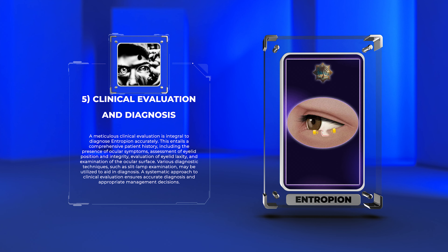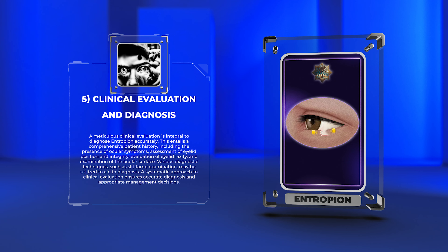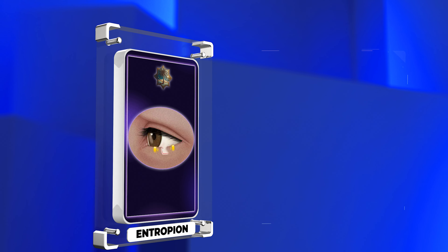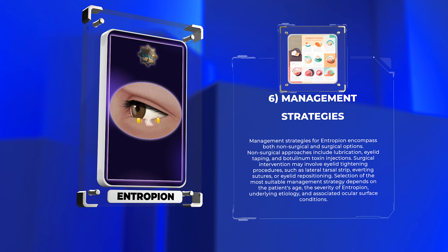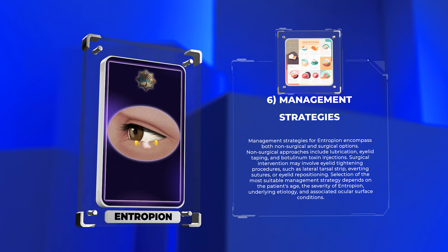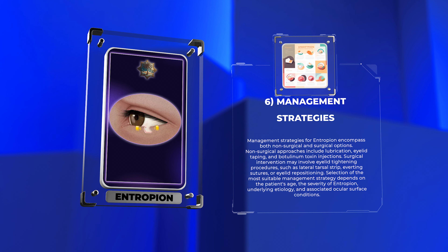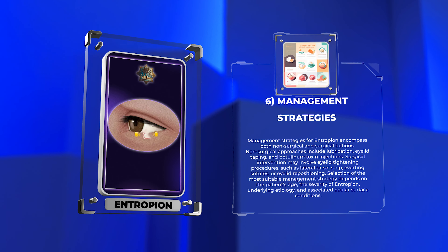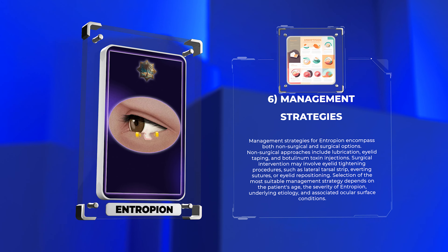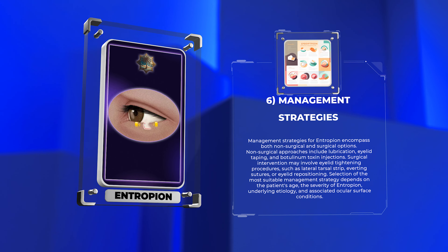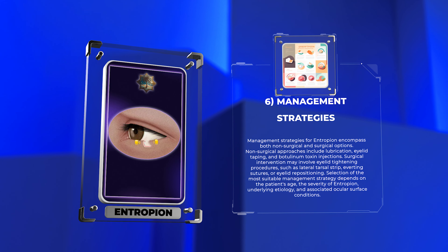Management strategies for entropion encompass both non-surgical and surgical options. Non-surgical approaches include lubrication, eyelid taping, and botulinum toxin injections. Surgical intervention may involve eyelid tightening procedures, such as lateral tarsal strip, averting sutures, or eyelid repositioning. Selection of the most suitable management strategy depends on the patient's age, the severity of entropion, underlying etiology, and associated ocular surface conditions.